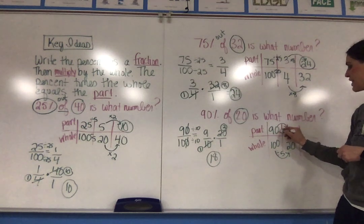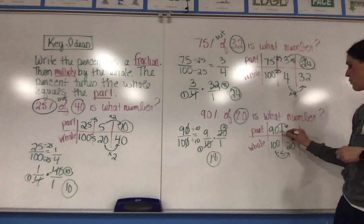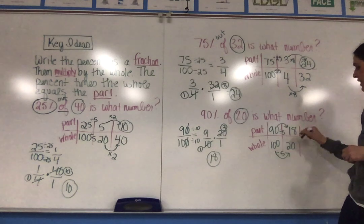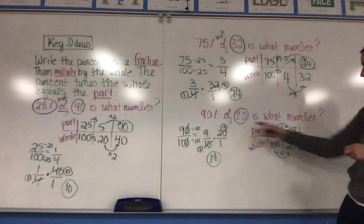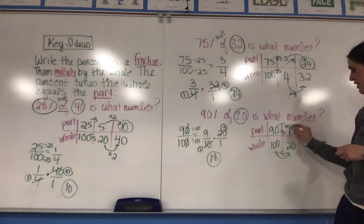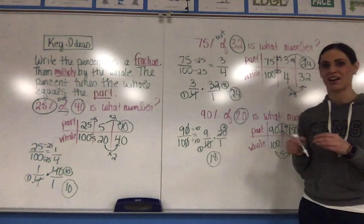But I do have to divide 90 by 5. And when I do that, I get 18. Again, I have the part of 18 out of the whole 20, which answers my question of 18.